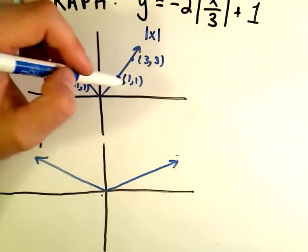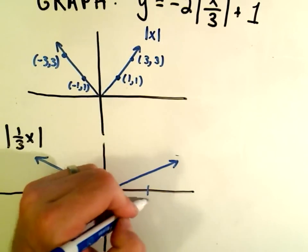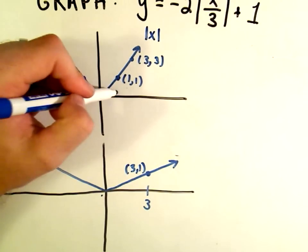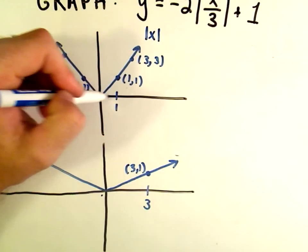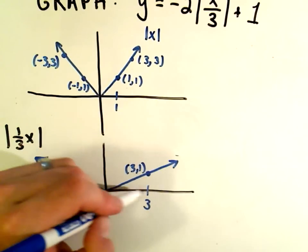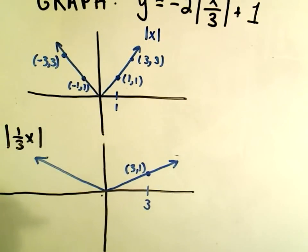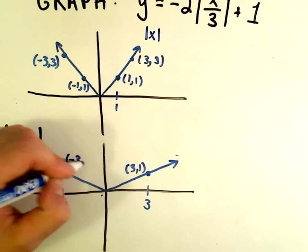Instead of being at 1, 1, notice now if you plug 3 in, you'll get 3 over 3, you'll get 1 out. Originally to attain a height of 1, I had to go 1 unit out. I'm stretching it by a factor of 3, so now I'm going to have to go 3 units out to achieve that same height of 1 unit. Maybe we'll put a point on the other side as well. So here's negative 3 comma 1.